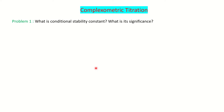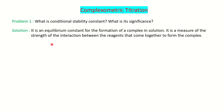The first question is: what is conditional stability constant and what is its significance? The questions we are going to discuss are important for MSc chemistry students and helpful for those appearing for competitive exams such as CSIR NET, GATE, IIT JAM, and BSc chemistry students. The conditional stability constant is the equilibrium constant of the complex formation, and it tells the strength of the interaction between the reagents that come together to form the complex.